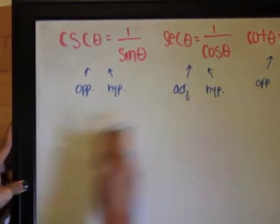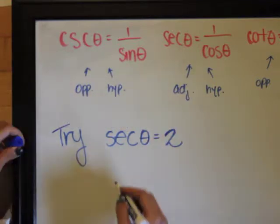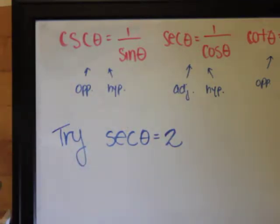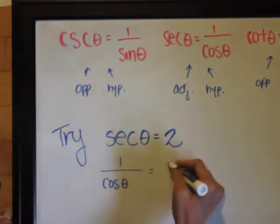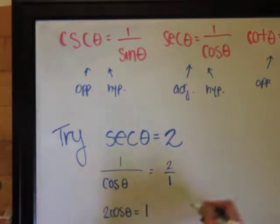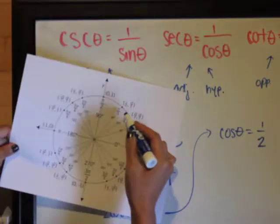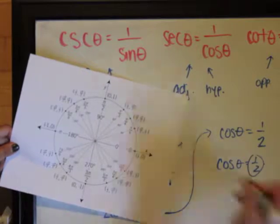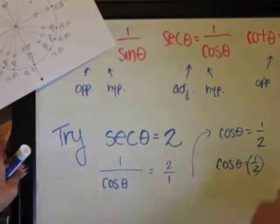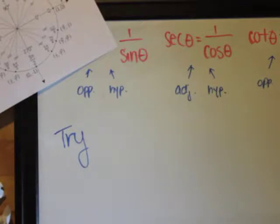Now I want you to pause the video and try sec θ = 2. First, I hope you replaced that with 1/cos θ, then you get cos θ = 1/2. Using the unit circle, θ is π/3 or 60°.